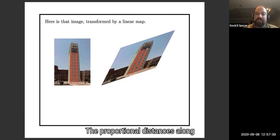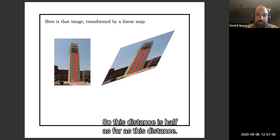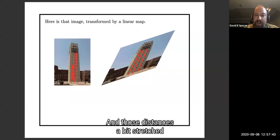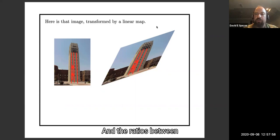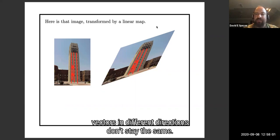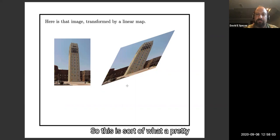The proportional distances along the same line stay the same. So this distance is half as far as this distance, and those distances have been stretched out to twice as far here and twice as far here. On the other hand, right angles don't stay right angles, and the ratios between vectors in different directions don't stay the same. This is what a pretty generic linear map looks like.